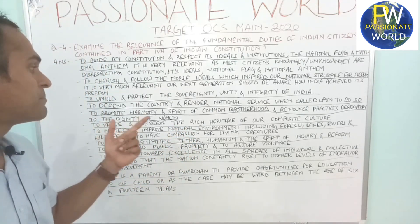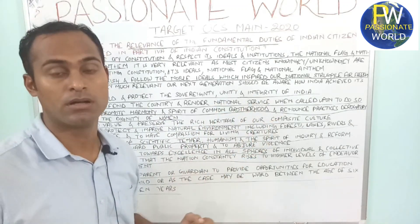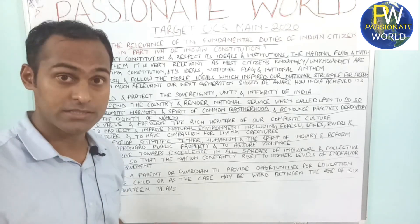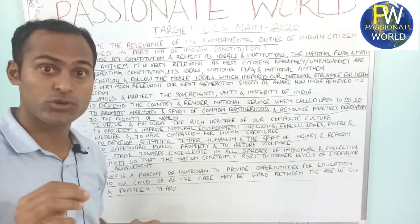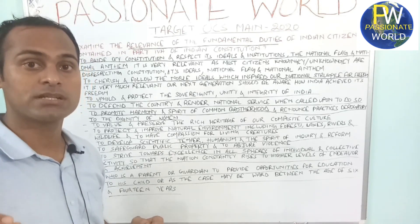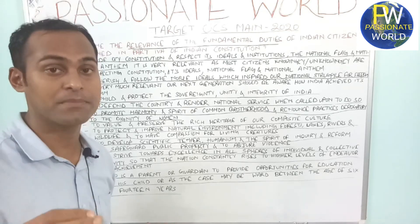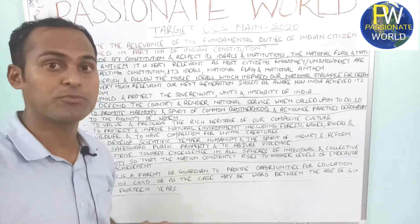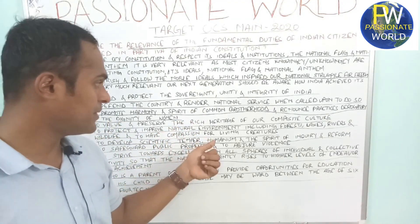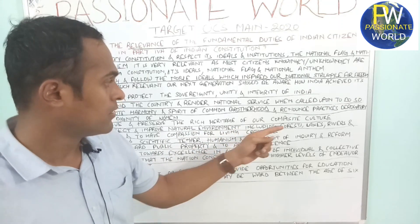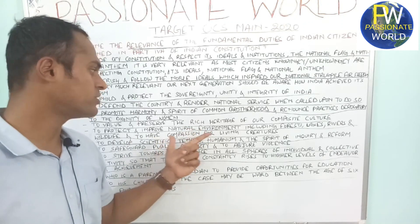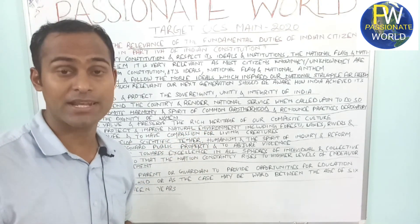The sixth duty is to value and preserve the rich heritage of our composite culture. India is a nation where so many different cultures and communities live together, so we have to preserve our composite culture — from Kashmir to Kanyakumari we are one. The seventh duty is to protect and improve the natural environment including forests, lakes, rivers, and wildlife, and to have compassion for living creatures.